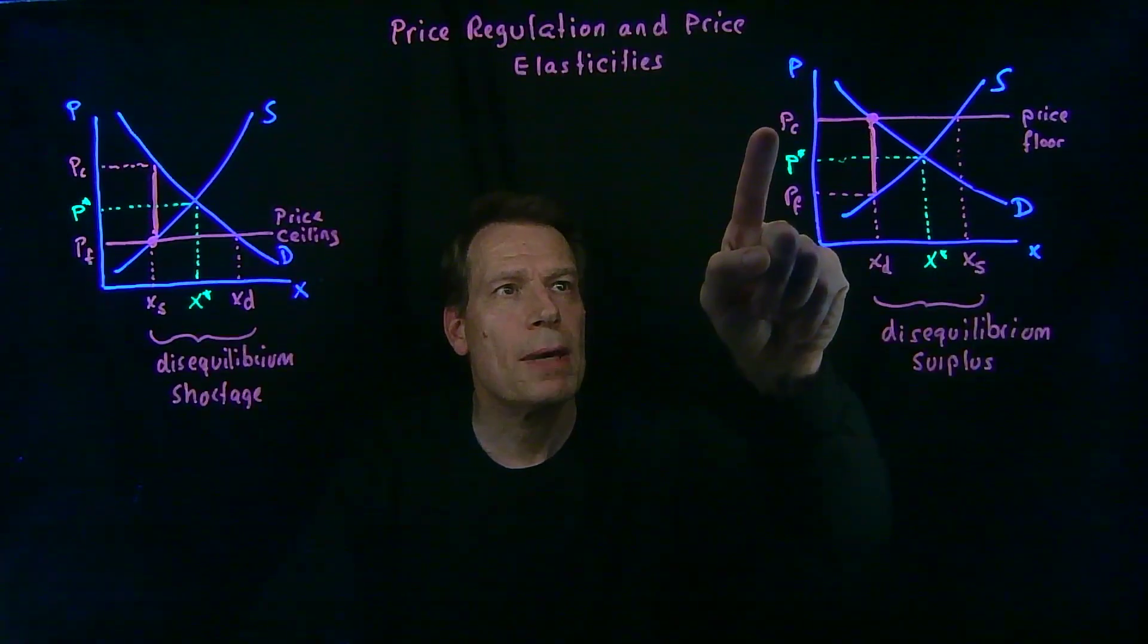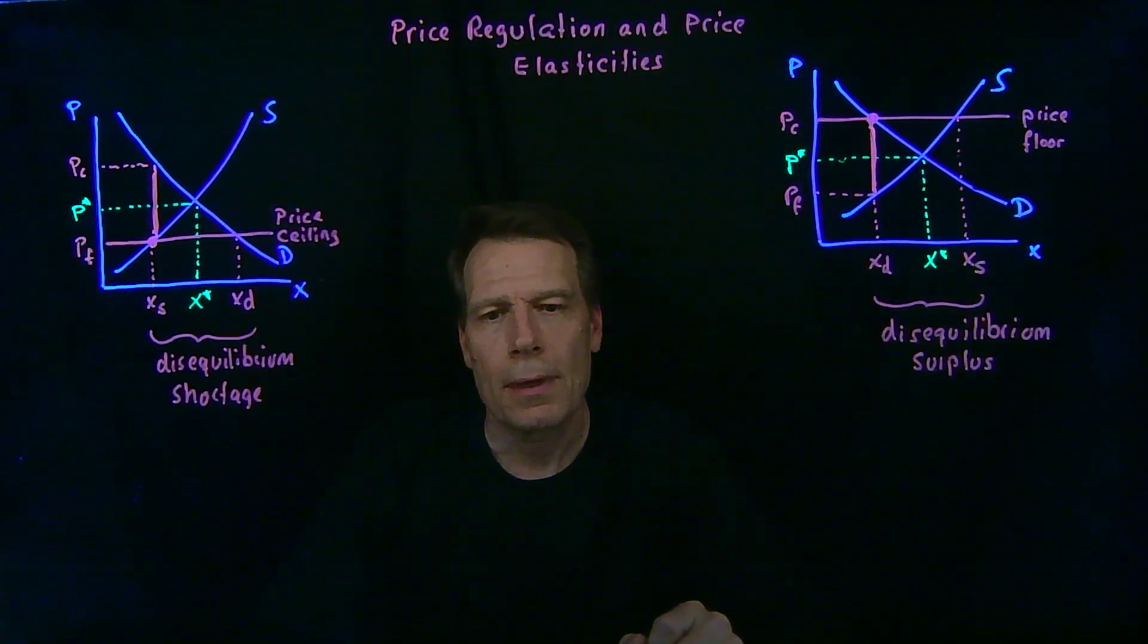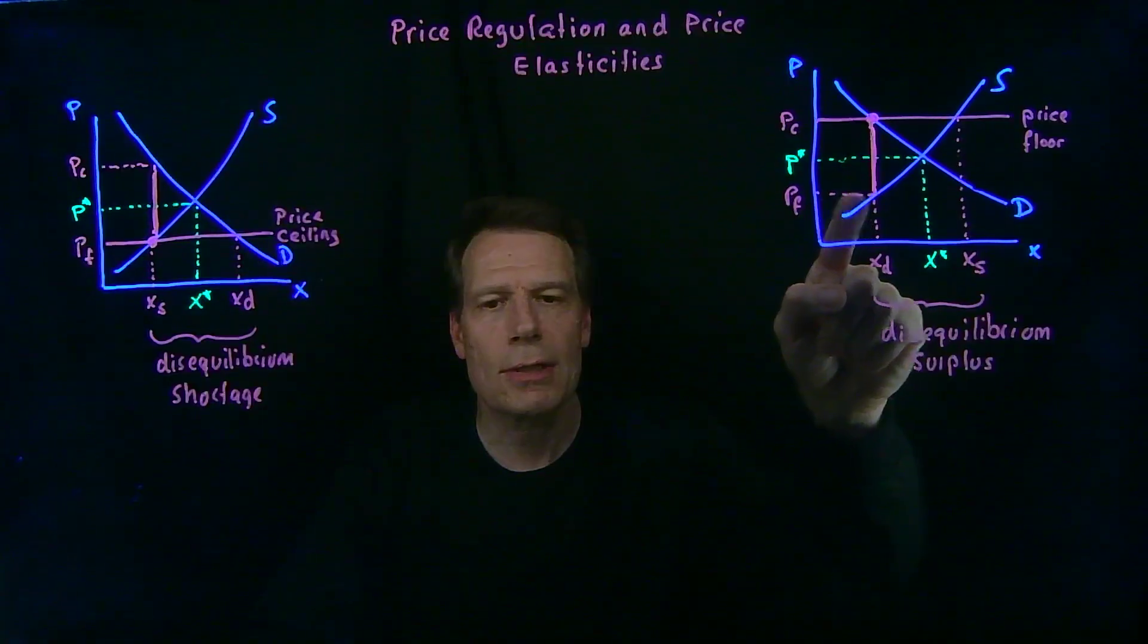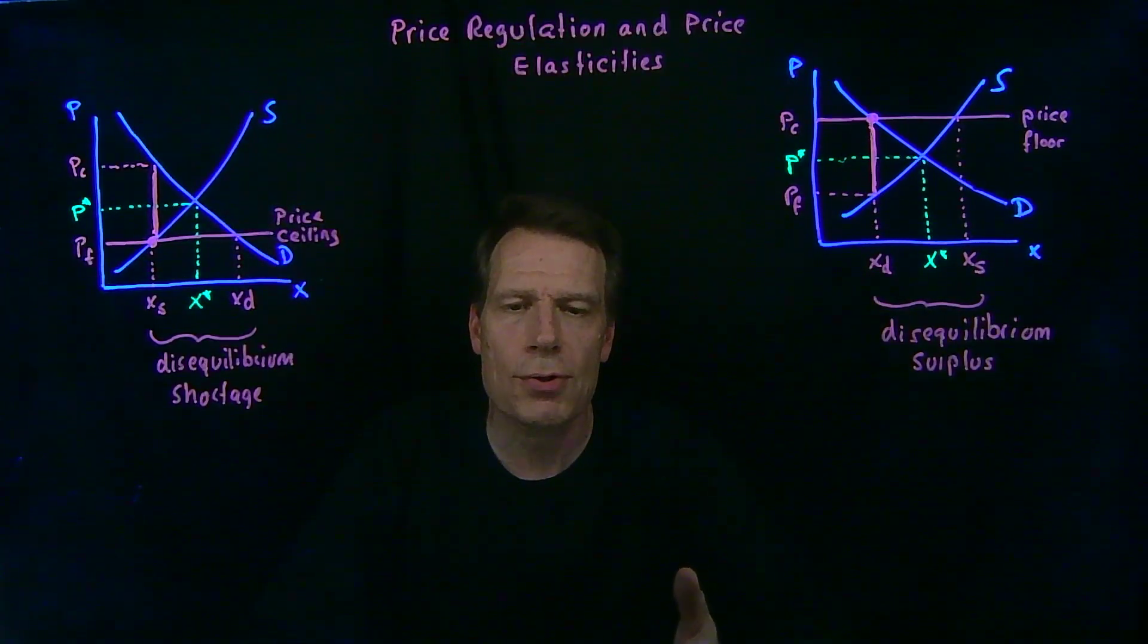And there, consumers pay the price floor, but firms actually receive a price that's lower by that equilibrium effort cost they have to engage in to get their goods to consumers.